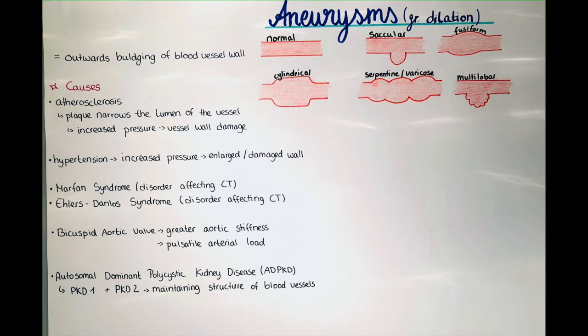Ehlers-Danlos syndrome is another connective tissue disorder which also affects the strength of the vessel wall. A bicuspid aortic valve — occurring in approximately 1 to 2 percent of the population — is where the aortic valve has only 2 cusps instead of 3. This leads to a change in aortic stiffness and a pulsatile arterial load, causing hemodynamic changes that can in turn lead to an aneurysm.